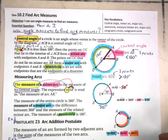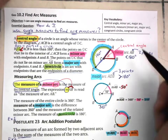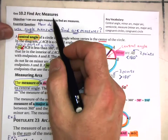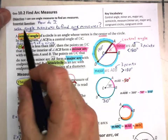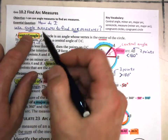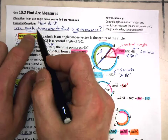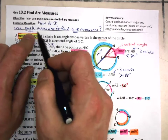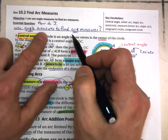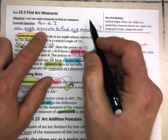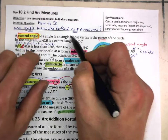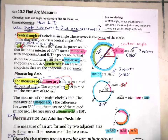Welcome to 10.2, Find Arc Measures. Our essential question is: how do I use angle measures in order to find arc measures? So what's this thing, arc, all about?